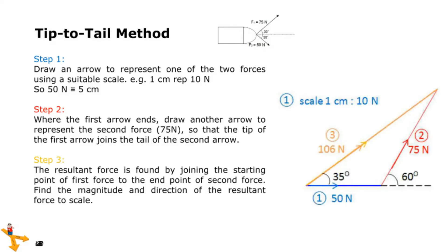Step 3: The resultant force is found by joining the starting point of first force to the end point of second force. Find the magnitude and direction of the resultant force to scale. Measuring the resultant represented by the yellow line, F net equals 10.6 times 10 equals 106 N at an angle of 35 degrees from 50 N.